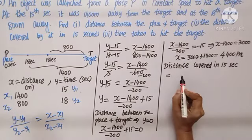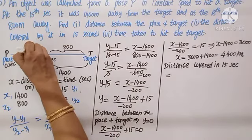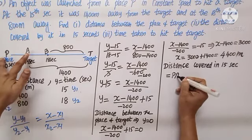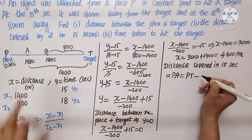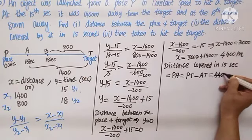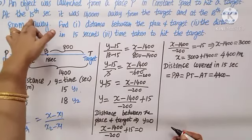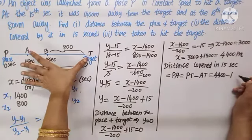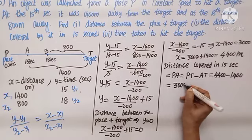Second subdivision: find the distance covered in 15 seconds. Call the launch point A and let B be the position at 15 seconds. The distance PA equals total distance PT minus AT. The total distance PT is 4400 meters, and AT is 1400 meters since at 15 seconds the target is 1400 meters away. So the distance covered is 4400 minus 1400 equals 3000 meters.